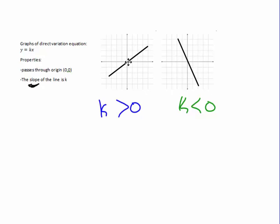So, the graphs of a direct variation are a straight line, goes through the origin with a slope of k. And again, slope, if it's positive, it's going to go up like this. As x gets bigger, y gets bigger. And if x gets bigger, y gets smaller, if k is less than 0.